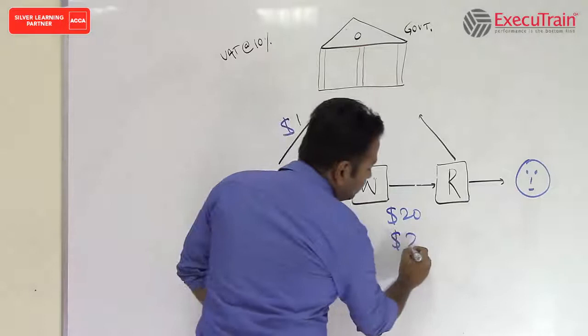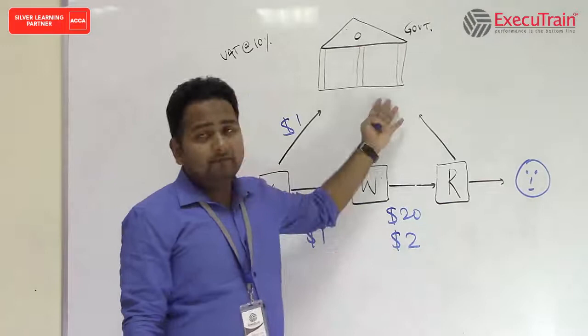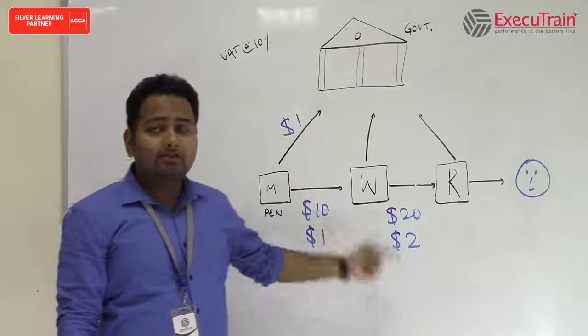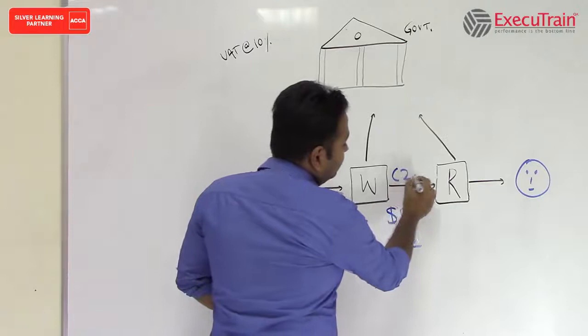Now this guy has to pay $2 to the government. But out of this $2, he has already paid $1 at the time of purchase. So the net effect, if you see, this guy has to pay $2 minus $1 to the government as VAT.